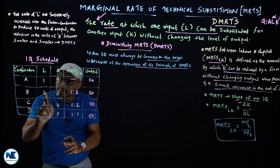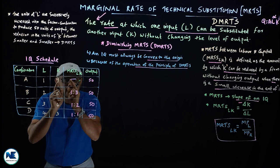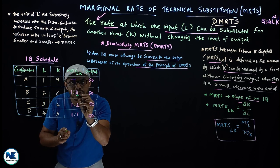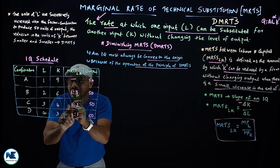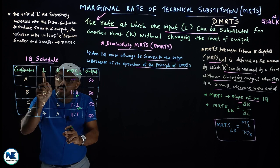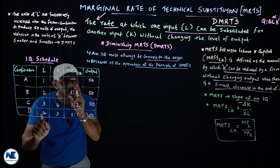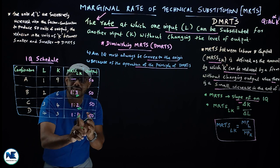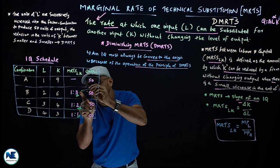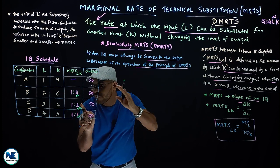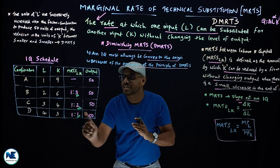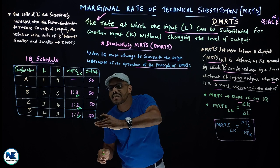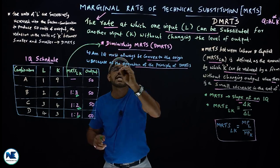At combination C: three labor units and four capital units. Capital reduced from six to four - two units given up for one labor unit added. At combination D: four labor units and three capital units. Capital declined from four to three - one unit sacrificed. The reduction in capital units is diminishing: three units, then two, then one. This represents diminishing marginal rate of technical substitution.